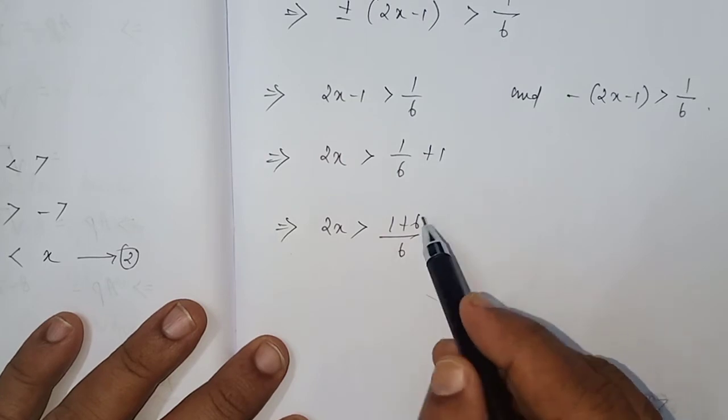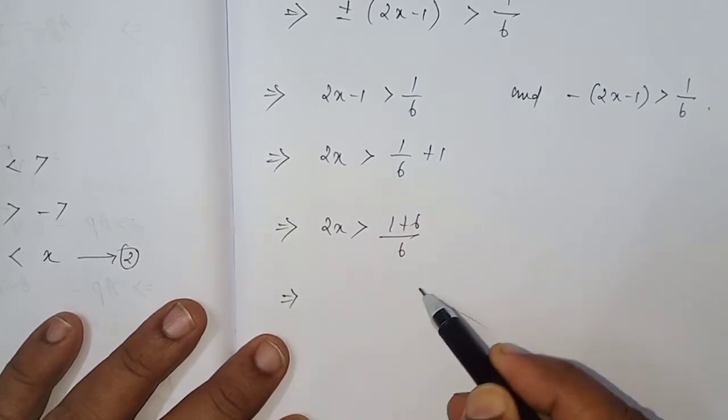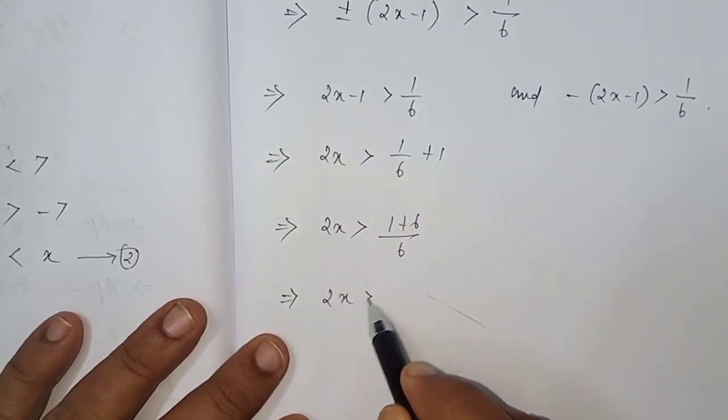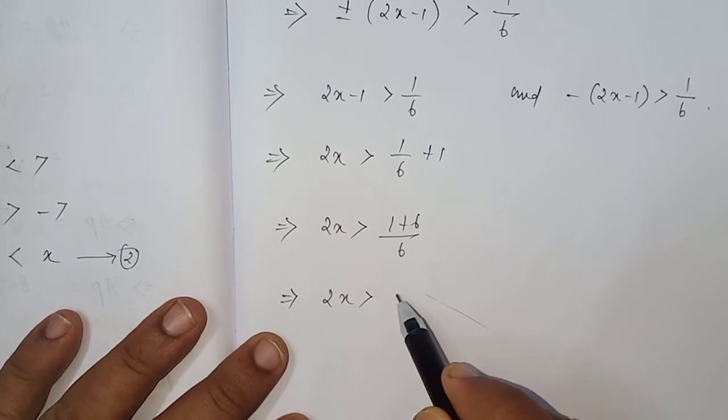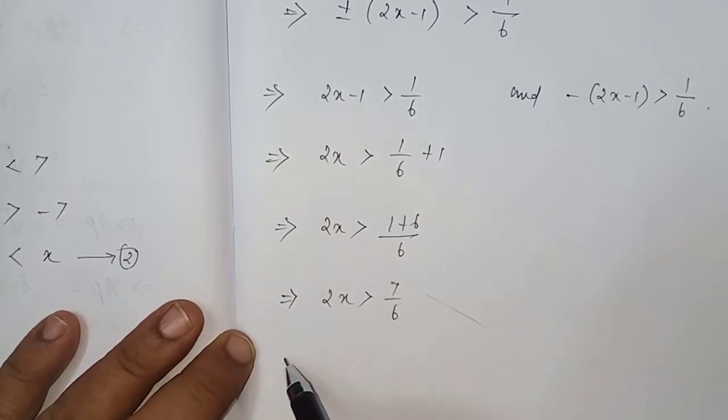Which implies 2x which is greater than 7 by 6. x which is greater than 7 by 2, 6 or 12.